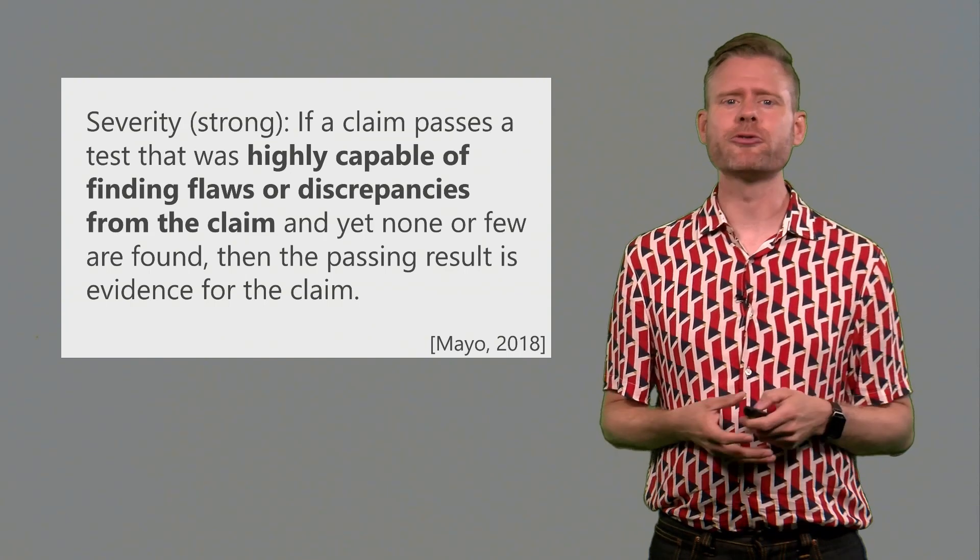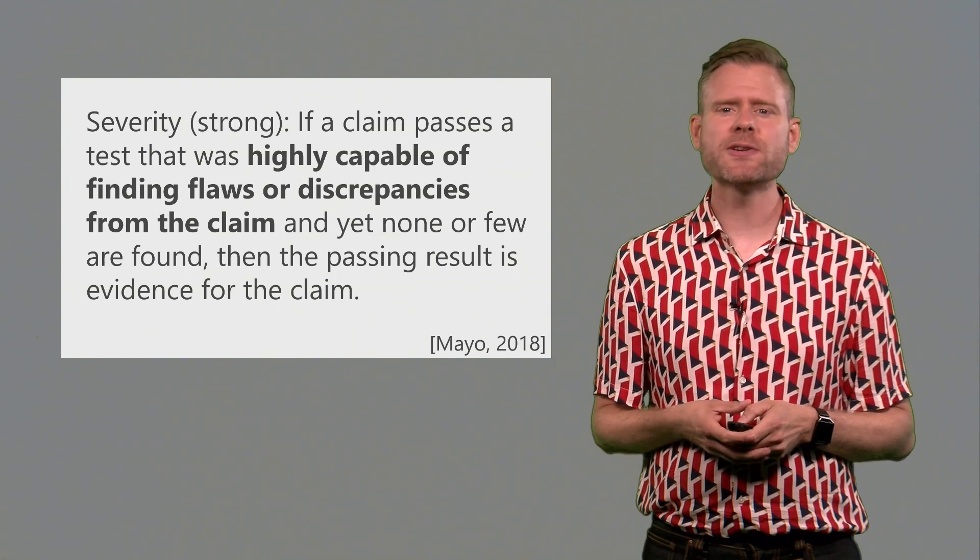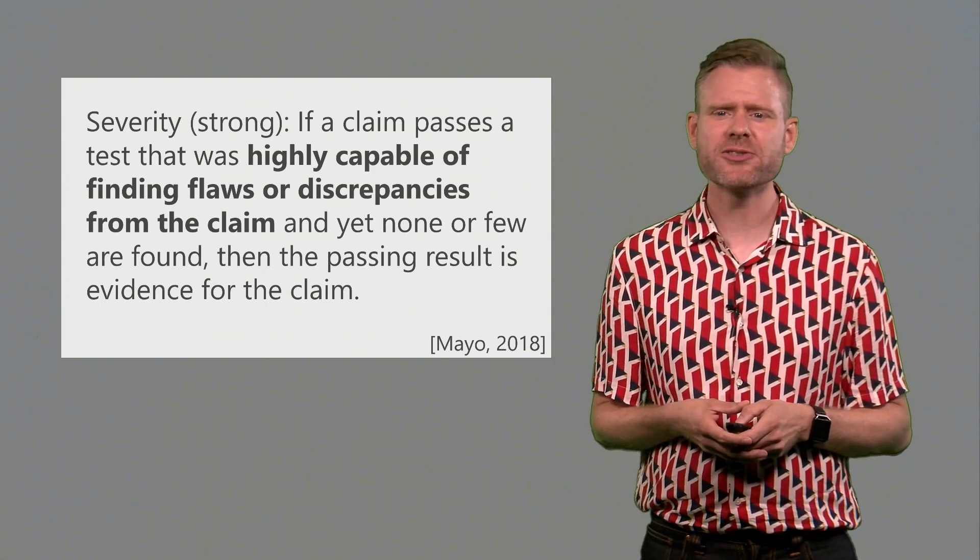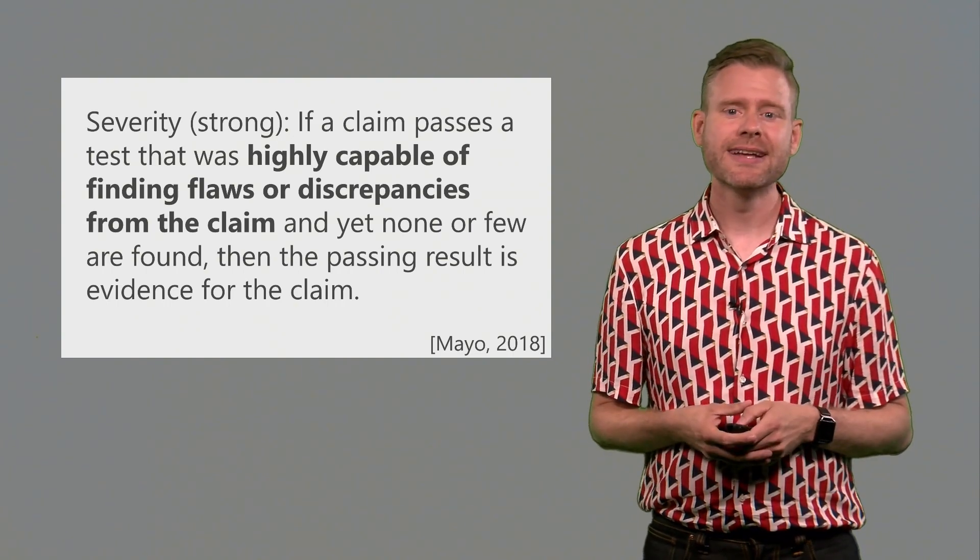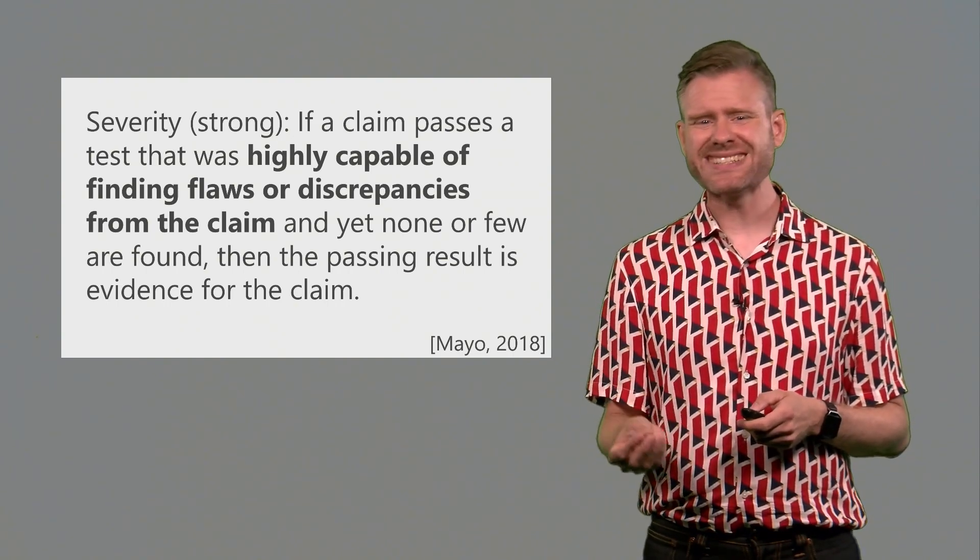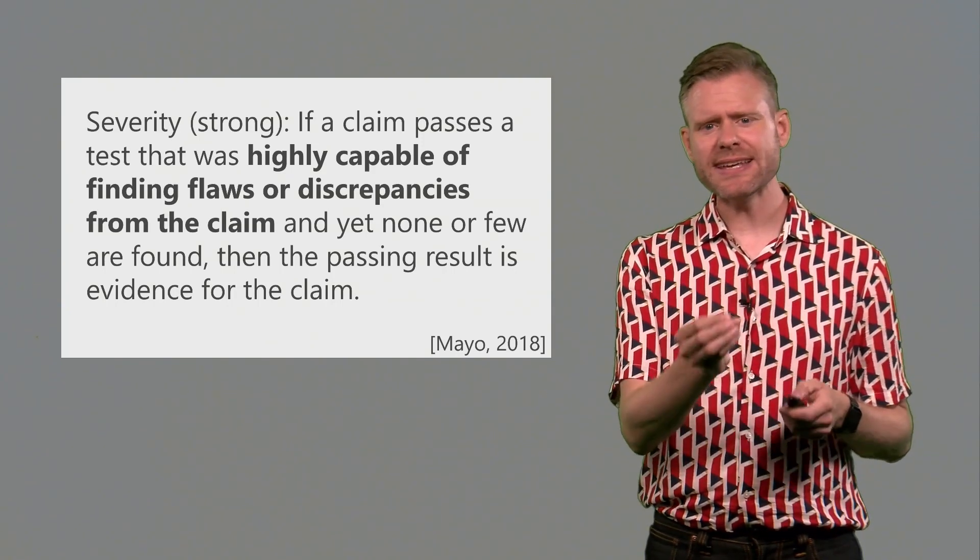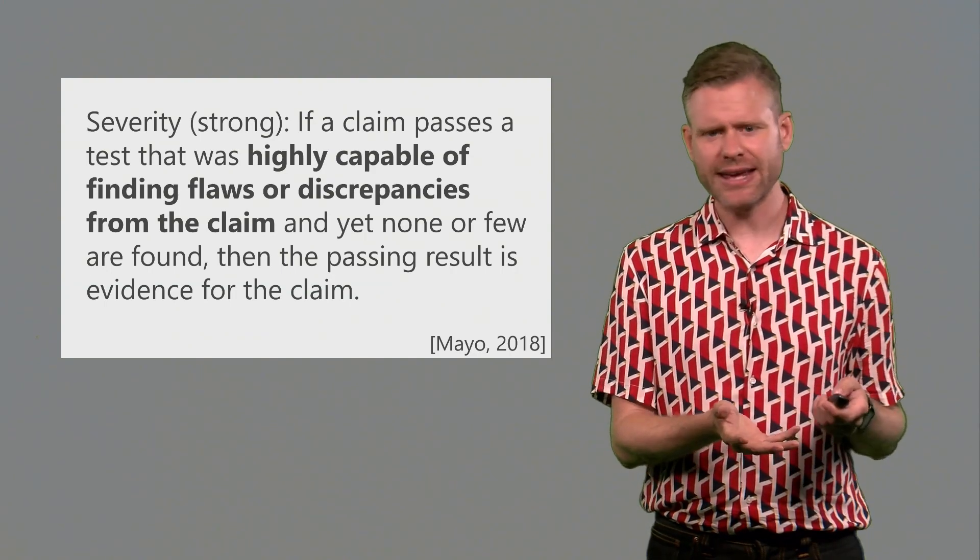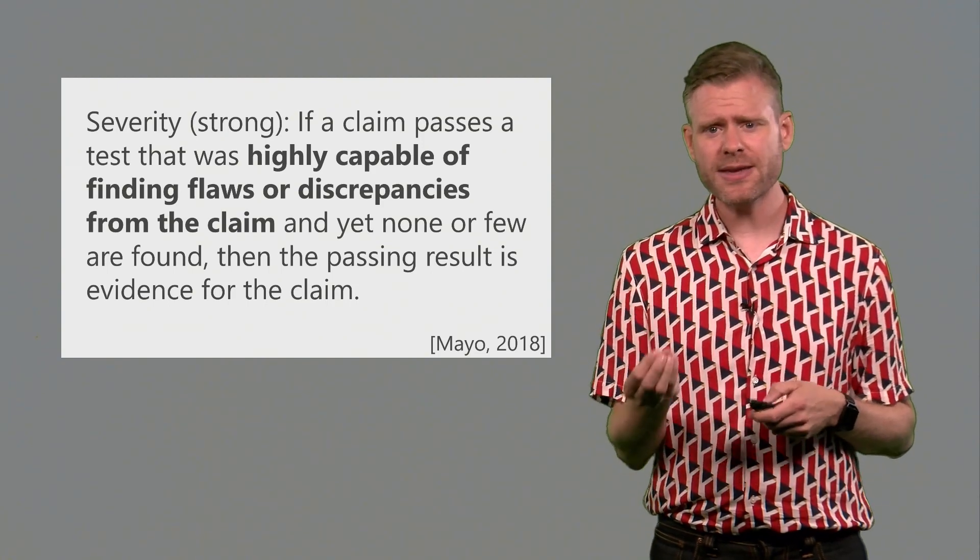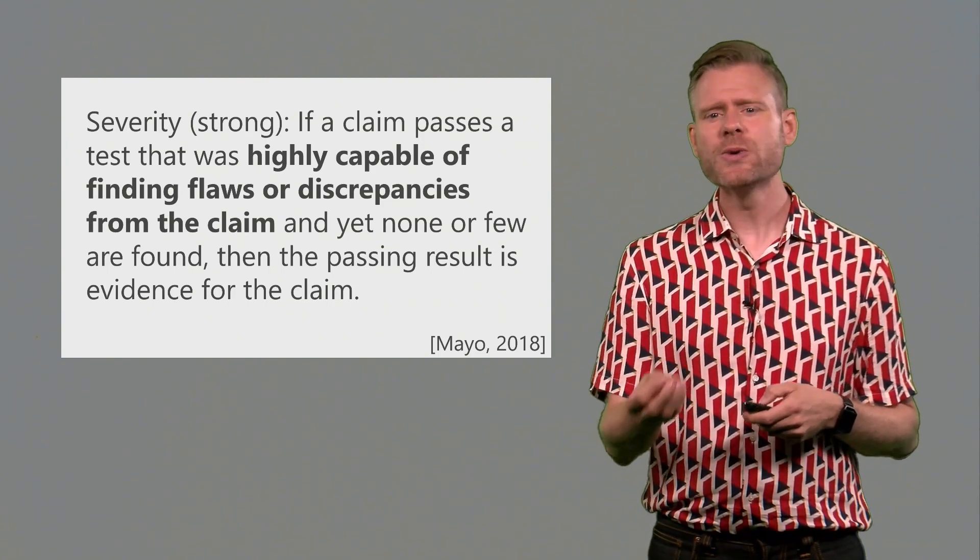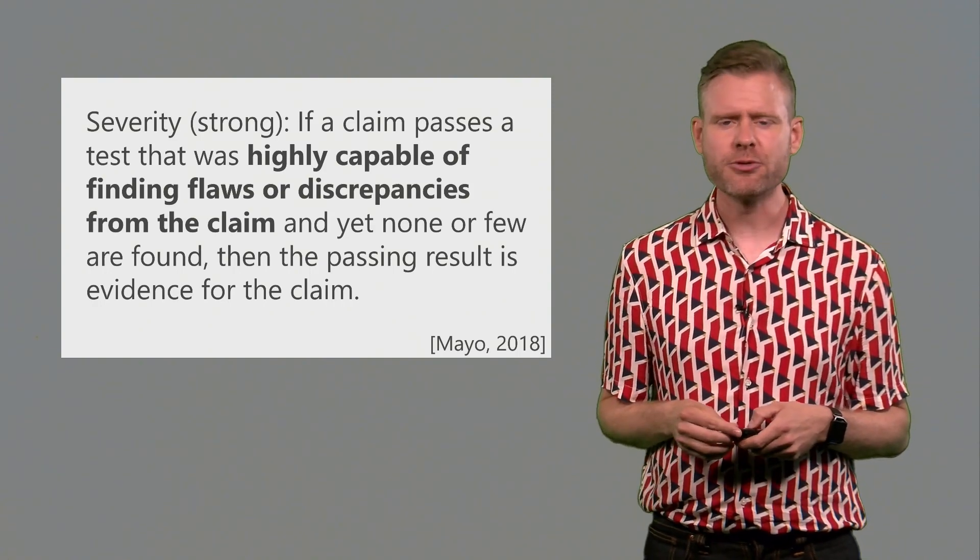There is also a stronger version of the severity argument. If a claim passes a test that was highly capable of finding flaws or discrepancies from the claim, and yet none or few are found, then the passing result is evidence for the claim. So in the weak severity statement, we see that if we don't have a severe test, we don't have any evidence. In this stronger version, we are actually saying that if something passes a severe test, we can interpret this as evidence for the claim, corroborating the prediction that we made.